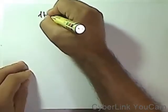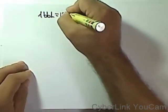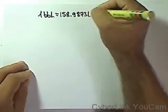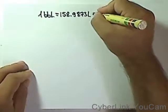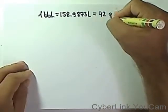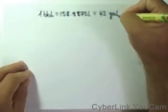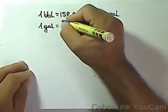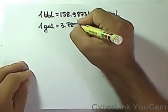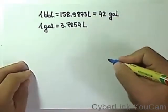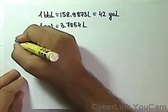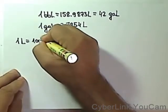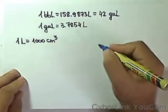So let's do it again. One barrel equals 158.9873 liters, or 42 gallons. One gallon equals 3.7854 liters.